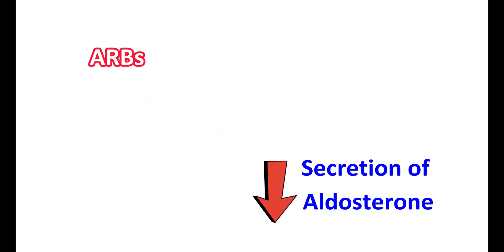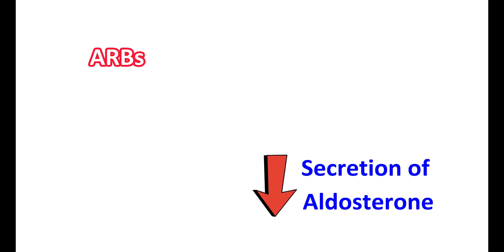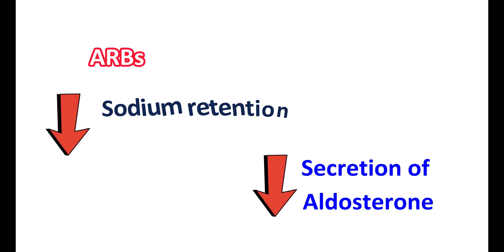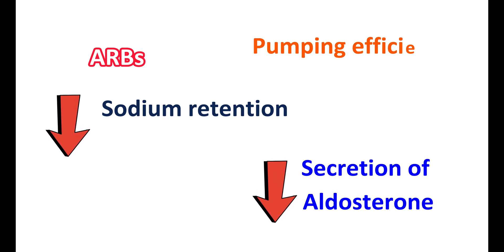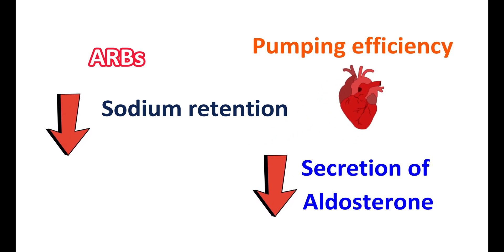ARBs can also reduce the secretion of aldosterone, which is the hormone responsible for reabsorption of sodium into the body. Therefore, ARBs reduce sodium retention and reduce body fluid volume. This improves the pumping efficiency of the heart, thereby relieving the symptoms of heart failure.